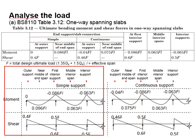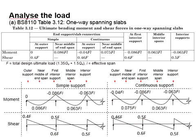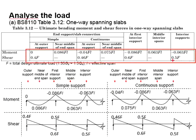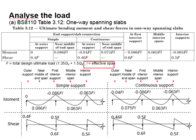This diagram shows a simply supported end span, and this one shows the continuous end span. There is a series of factors to be multiplied with F and L in order to determine the moment and shear load. F represents the total design ultimate load, which equals 1.35 GK plus 1.5 QK, and L refers to the effective span of the slab.